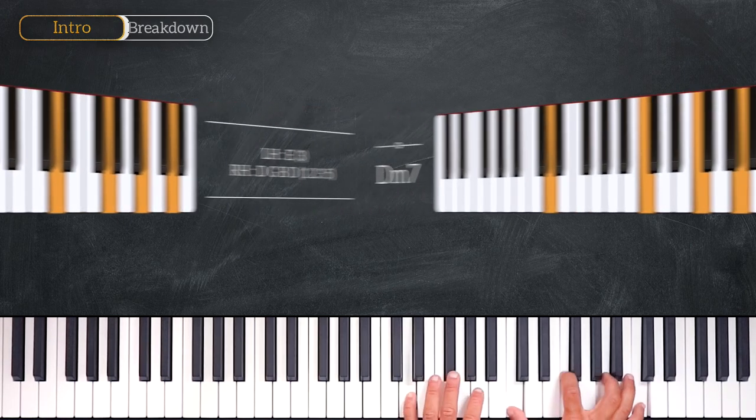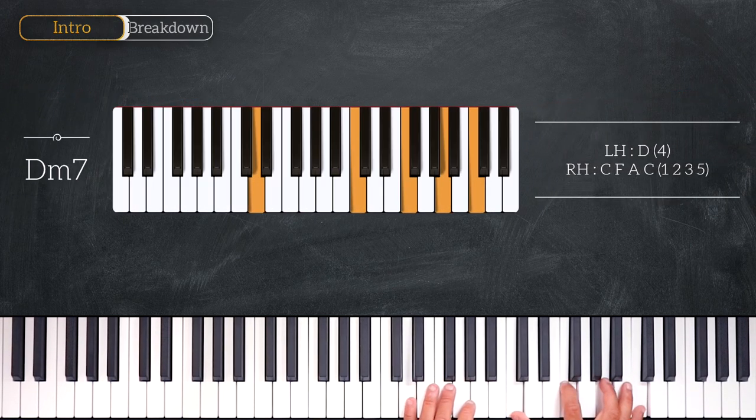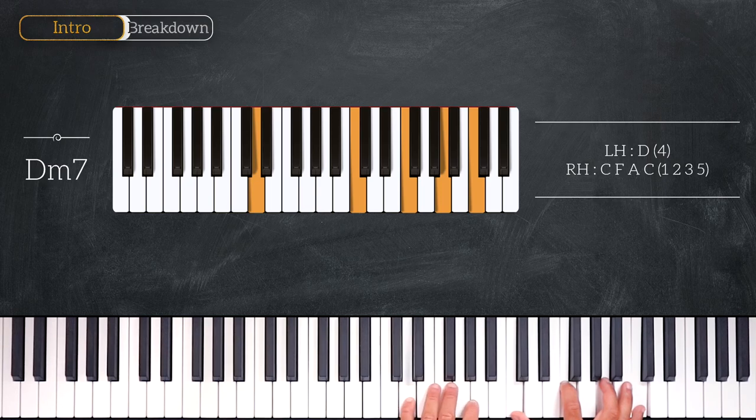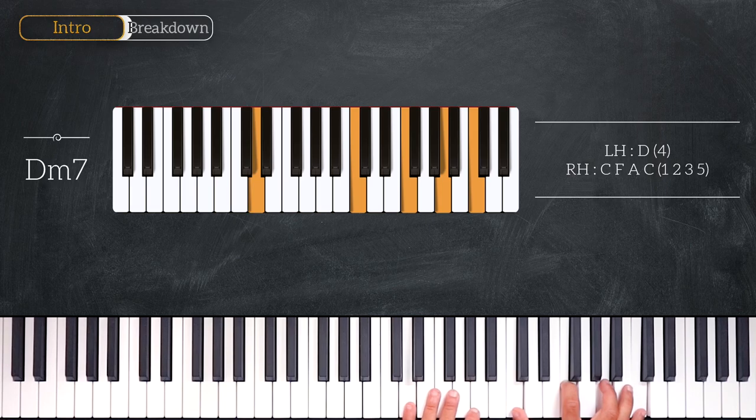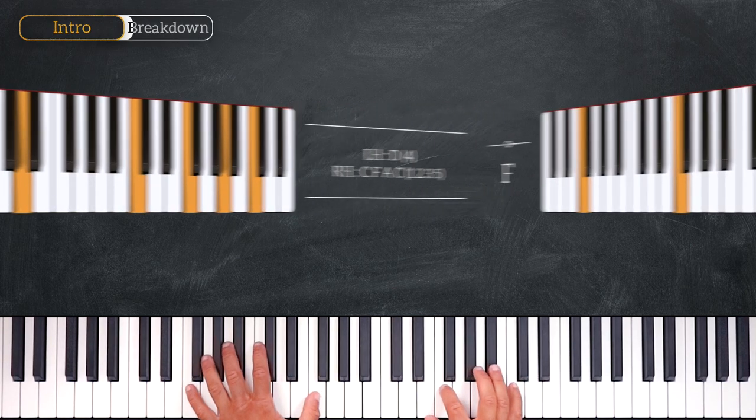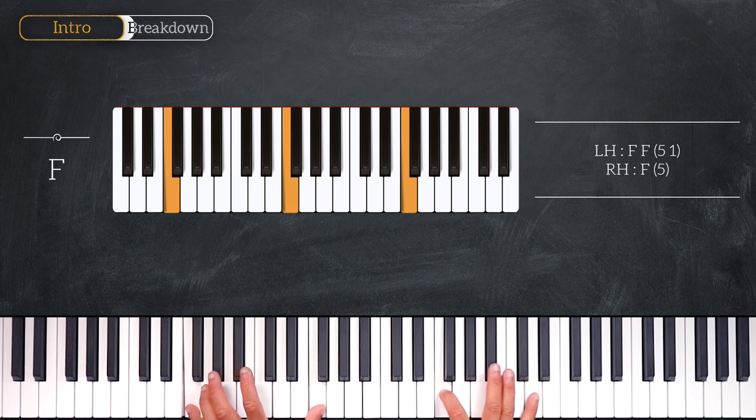Then we do the same and we play this D minor 7 chord, playing D on the left, C, F, A, C. Then we'll play this F in octave - octave F on the left and F on the right.